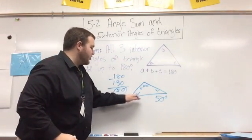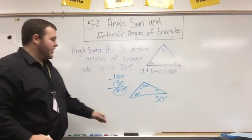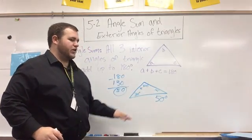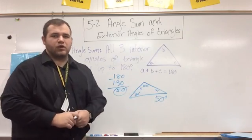And you can re-add them back up, 30 and 50 is 80, plus 100 is 180. So we can find the missing angle of a triangle by adding the other two and subtracting that from 180.